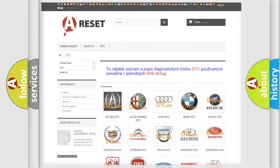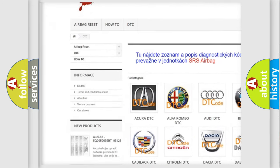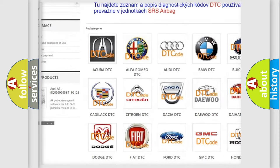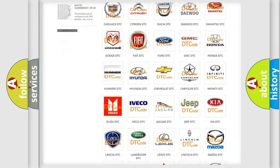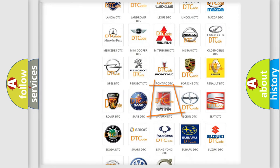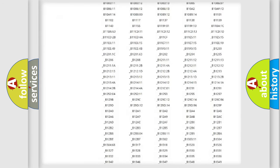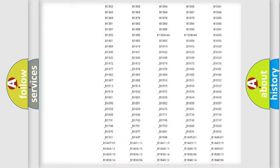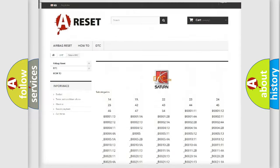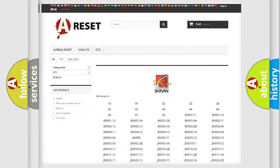Our website airbagreset.sk produces useful videos for you. You do not have to go through the OBD2 protocol anymore to know how to troubleshoot any car breakdown. You will find all the diagnostic codes that can be diagnosed in Saturn vehicles, and also many other useful things.